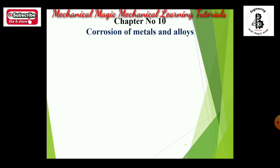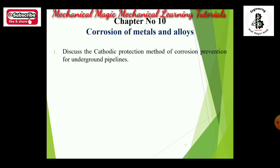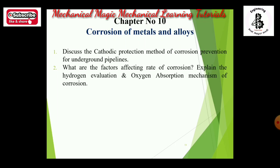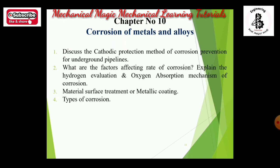Chapter 10 is corrosion of metals and alloys — a new chapter in this syllabus. Topics include: discuss cathodic protection methods of corrosion prevention for underground pipelines for 4 to 7 marks; factors affecting the rate of corrosion and explain hydrogen evolution and oxygen absorption mechanisms of corrosion for 7 marks; material surface treatments or metallic coating for 4 marks; types of corrosion for 7 marks. At least one of these questions has maximum chance in the examination.